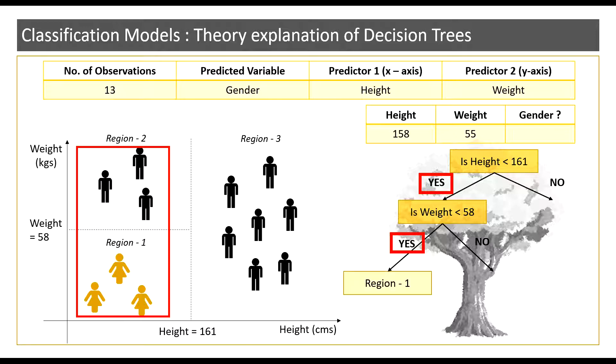We now look at the majority of the gender observations that lie in this particular region. Here we observe that all the observations that lie in region 1 belong to the female gender. Hence given the height of 158 centimeters and weight of 55 kgs we predict the gender to be female.